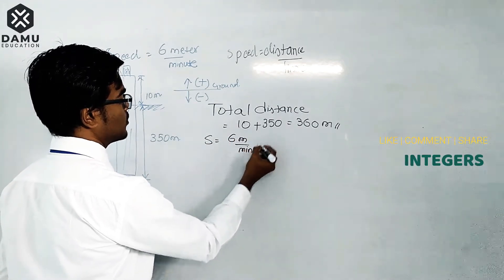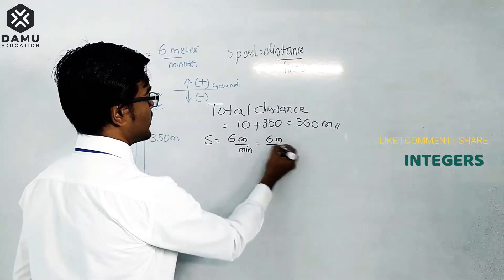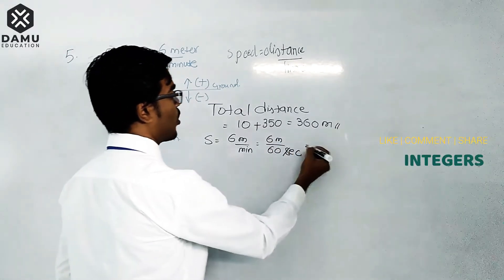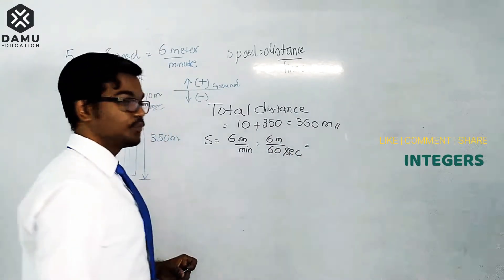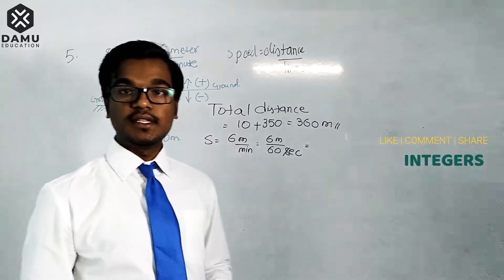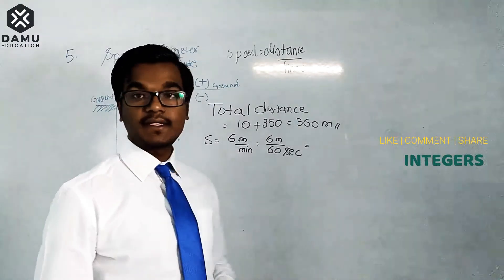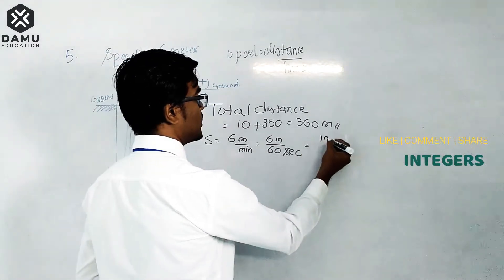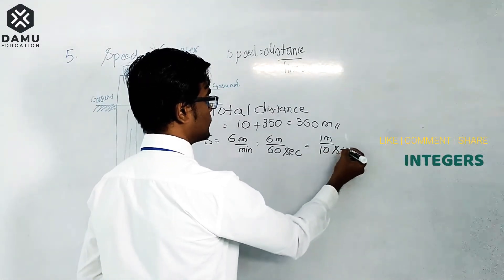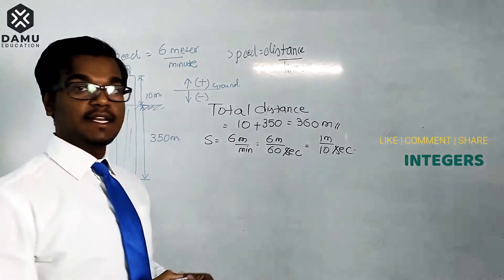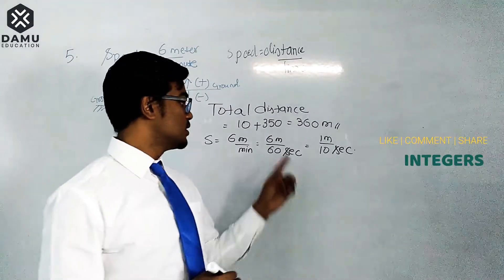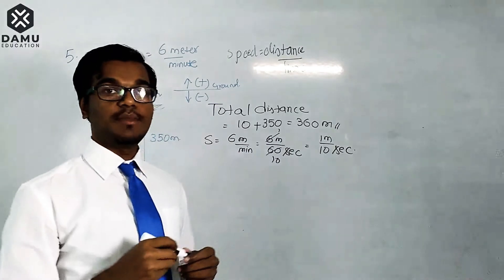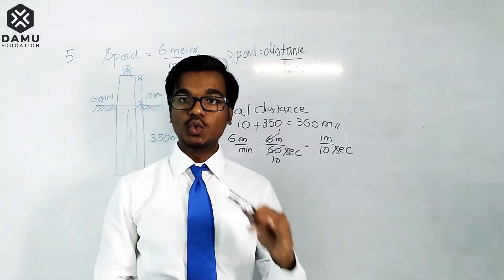The speed is six meters per minute. Six meters per one minute equals 60 seconds, so six divided by 60 gives one meter per ten seconds. Therefore, the speed is one meter per ten seconds.